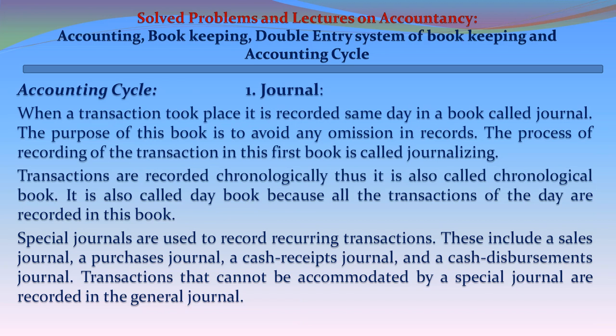Step 1 - Journal: When a transaction takes place, it is recorded the same day in a book called the Journal. The purpose of this book is to avoid any omission in records. The process of recording transactions in this book is called journalizing. Transactions are recorded chronologically, so it is also called a chronological book or day book. Special journals are used to record recurring transactions, including a sales journal, purchase journal, cash receipts journal, and cash disbursements journal. Transactions that cannot be accommodated by a special journal are recorded in the general journal.